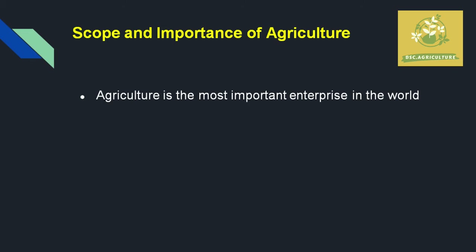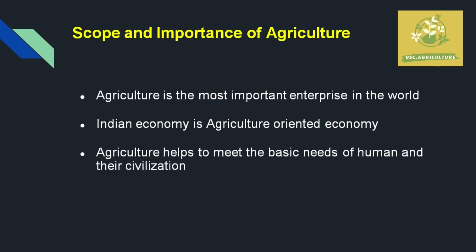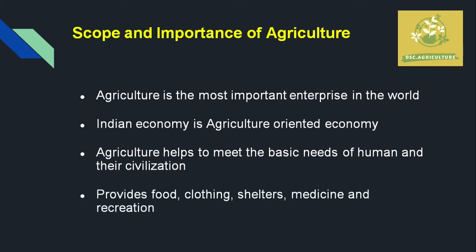Agriculture is the most important and most-wanted enterprise in the world because everyone needs food in everyday life. India is an agriculture-oriented country and agriculture provides the basic needs of human civilization — food, clothing, shelter, and even medicinal properties. Plants like tulsi are cultivated in large quantities for producing medicine in pharmaceutical industries. These are the major scope and importance of agriculture.